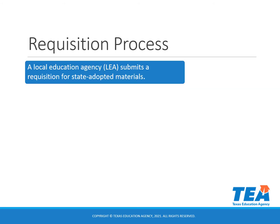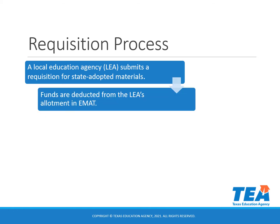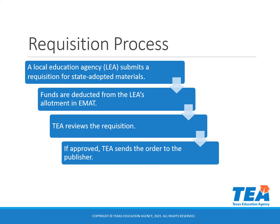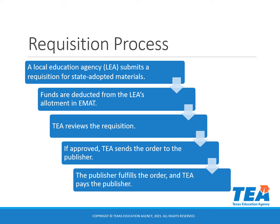The requisition process begins when a local education agency submits a requisition for state adopted materials. The funds are deducted from the LEA's allotment in EMAT. TEA reviews the requisition. If approved, TEA sends the order to the publisher. The publisher fulfills the order and TEA pays the publisher.